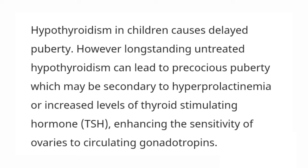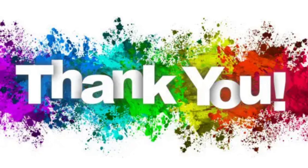When both these conditions are present, precocious puberty can occur. The basic mechanism is that long-standing and untreated hypothyroidism leads to increased levels of TSH. TSH causes increased sensitivity of the gonads to gonadotropins, and TSH also acts as a gonadotropin to the gonads. It stimulates the gonads — ovaries or testes — to produce hormones, thereby leading to precocious puberty.